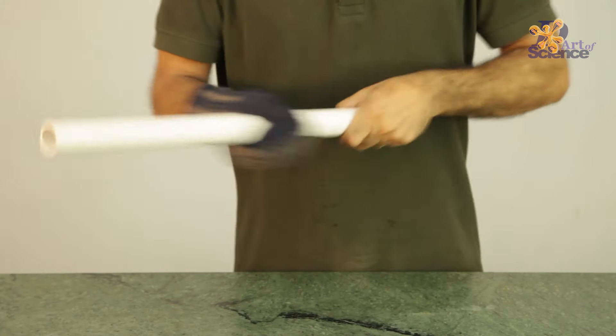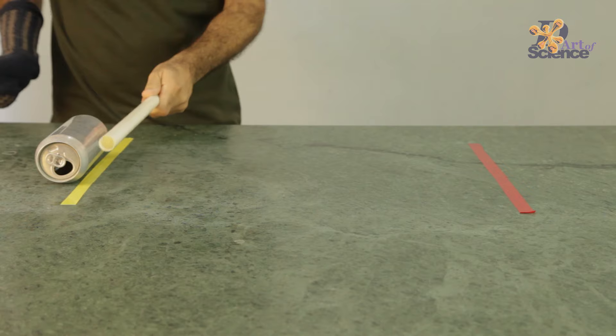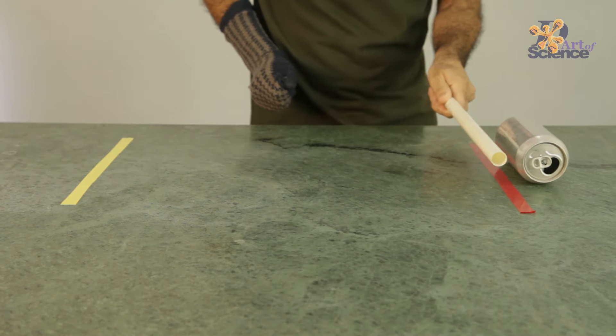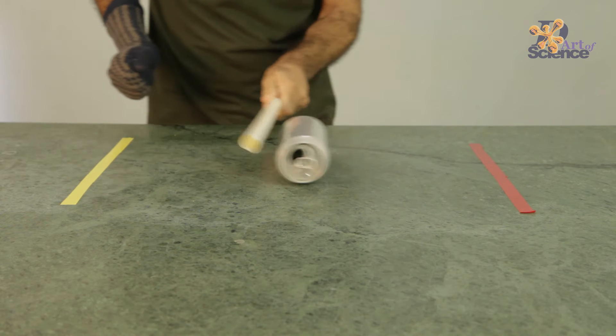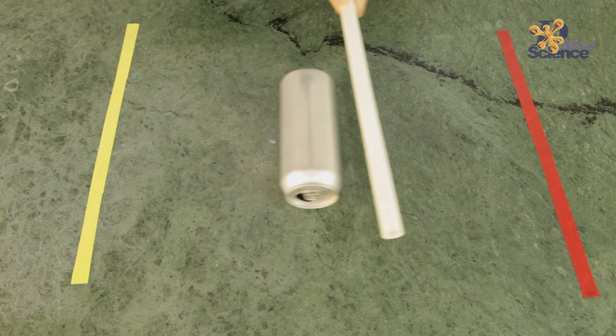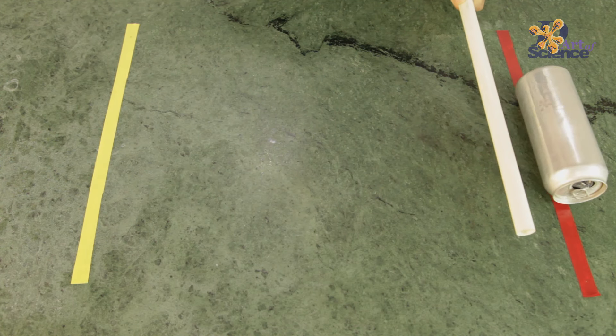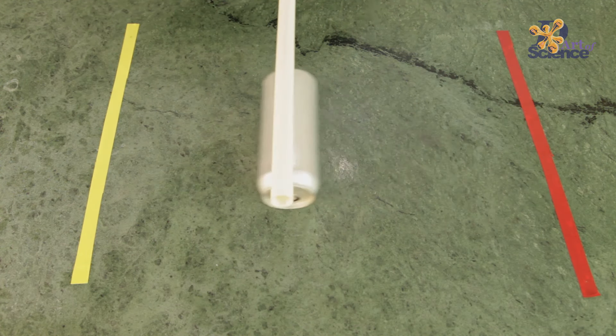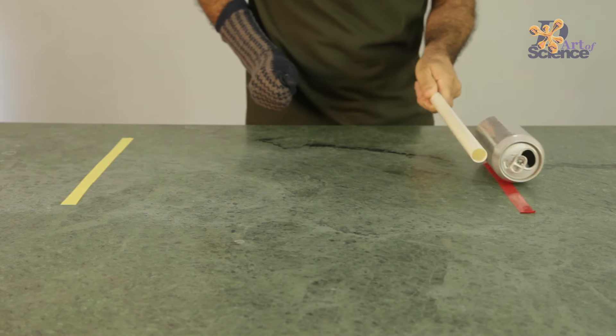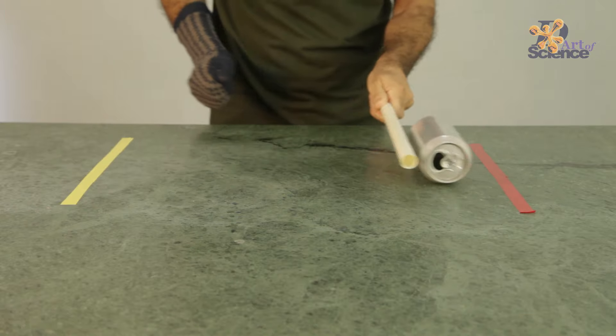I also mentioned that we will have some fun and games with static. One game is to pull the can without touching it. All you need to do is develop a lot of static and then use that to pull a can on the table. If two people do it, you can have a race using static electricity. The objective should be to start from one point and reach the other point and reverse and come back to the starting point.